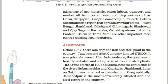All the important steel producing centers such as Bhilai, Durgapur, Burnpur, Jamshedpur, Rourkela and Bokaro are situated in a region that spreads over four states: West Bengal, Jharkhand, Odisha and Chhattisgarh.